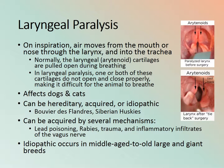Laryngeal paralysis: on inspiration, air moves from the mouth or nose through the larynx into the trachea. Normally the laryngeal cartilages are pulled open during breathing and close after. It affects dogs and cats and can be hereditary, acquired, or idiopathic. Acquired causes include lead poisoning, rabies, trauma, or inflammatory infiltrates of the vagus nerve.